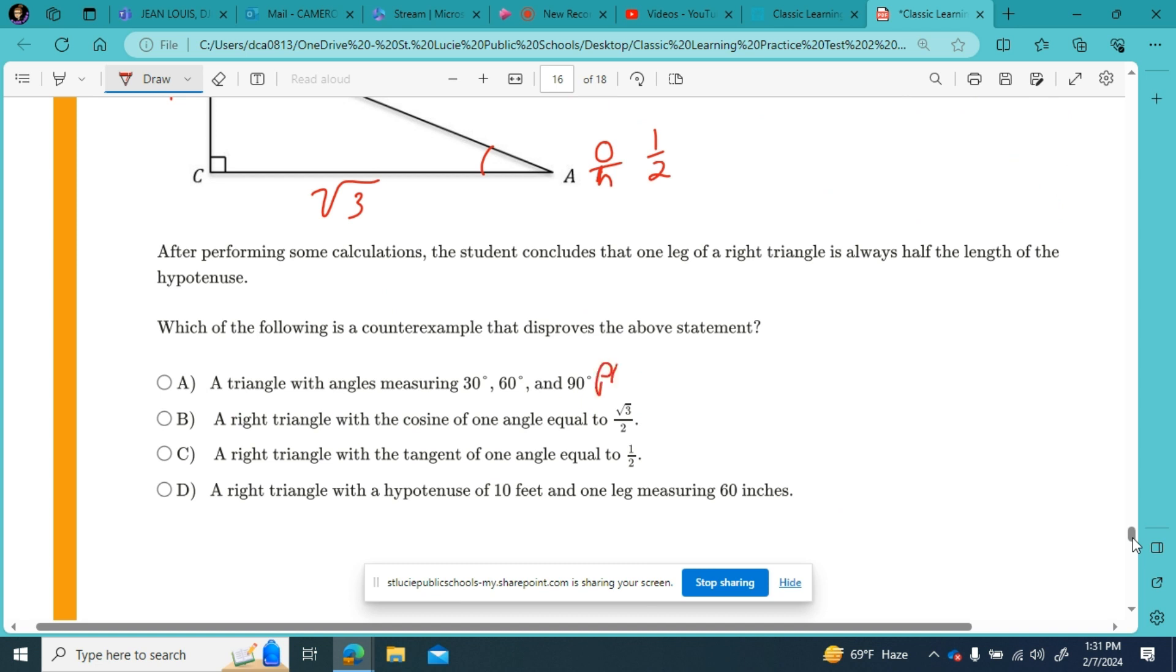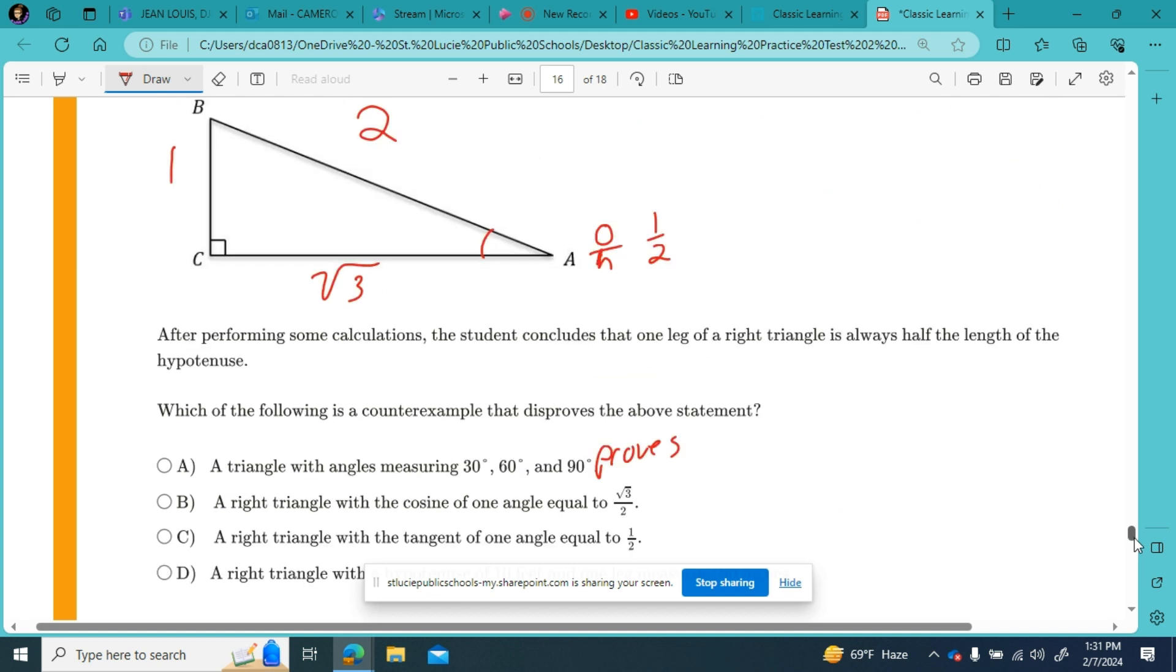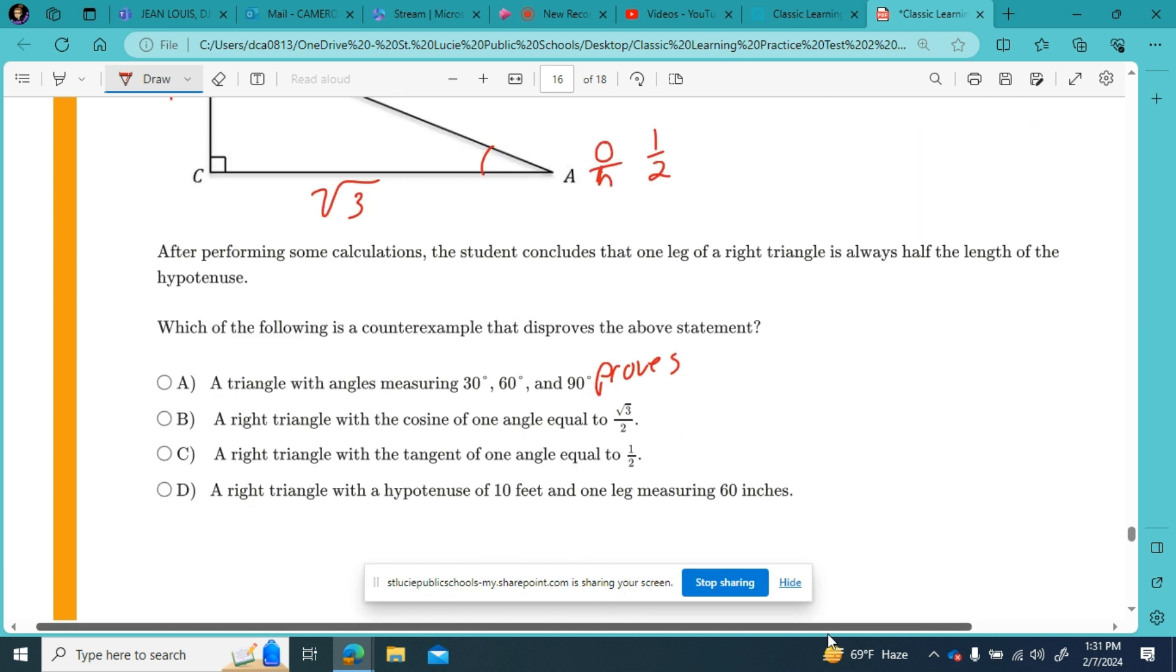Part B: a right triangle with the cosine of one angle equal to square root of 3 over 2. Well, that'd be the cosine of angle A. That would also prove it. That's also a 30, 60, 90 triangle. That proves it.